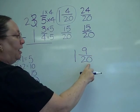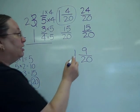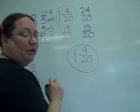Checking, nine and twenty are what we call relatively prime. In other words, there is no factor. So this is my answer.